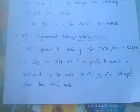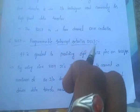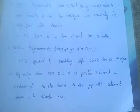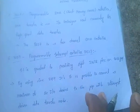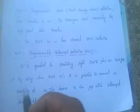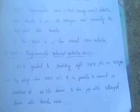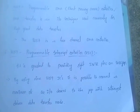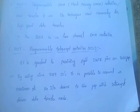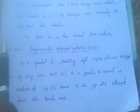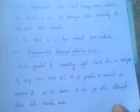8259 is a programmable interrupt controller (PIC). It is equivalent to providing 8 INTR pins on the 8085 microprocessor. By using 9 number of 8259 ICs, it is possible to connect a maximum of 64 input output devices to the microprocessor with interrupt driven data transfer mode.